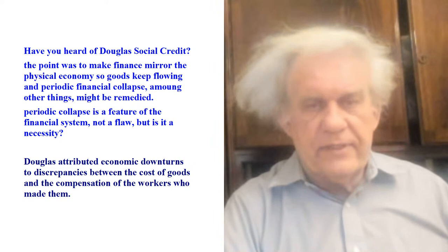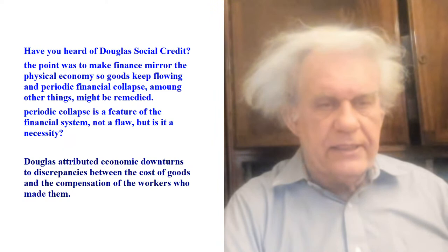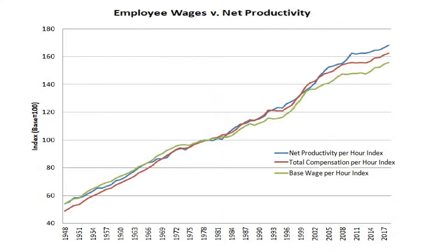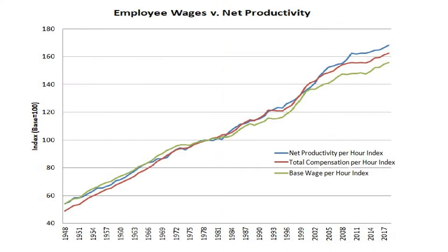That's our starting point, and I kind of agree with him. My theory in general is that we're going to have an economic collapse. What's happening is we're losing real wages over time. Here you see employee wages versus net productivity since 1948 all the way to 2017 — productivity is outstripping wages.